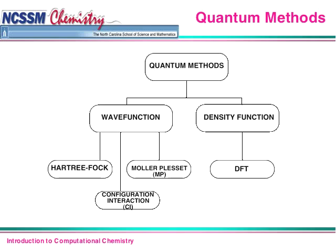Any time you're doing a wave function, that is an ab initio method. There are roughly three categories of wave function or ab initio methods: Hartree-Fock (HF), Møller-Plesset (MP), and configuration interaction (CI). There are more ab initio methods than these three, but these are the basic ones we'll spend some time on.